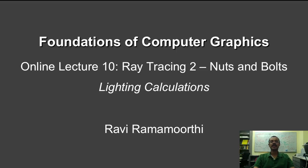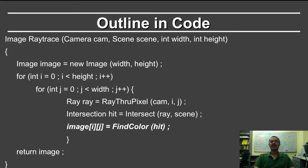In this segment, we'll briefly review the lighting calculations that you need to do in your ray tracer. Notice that in the code outline, we moved from generating the eye rays to finding the intersection points, to now finding the color that should be assigned to a ray and surface intersection point.